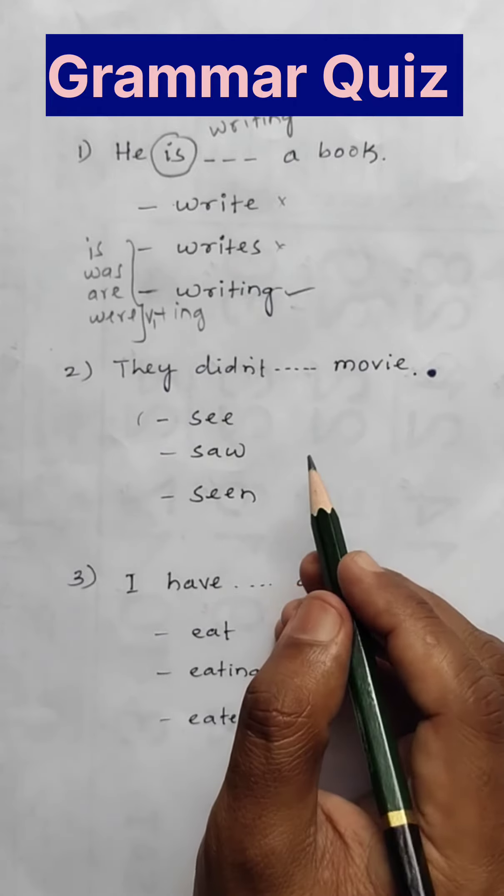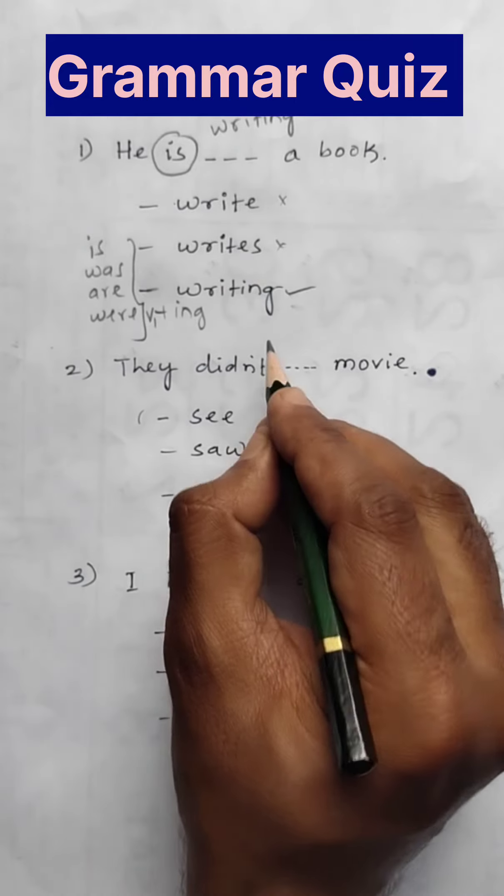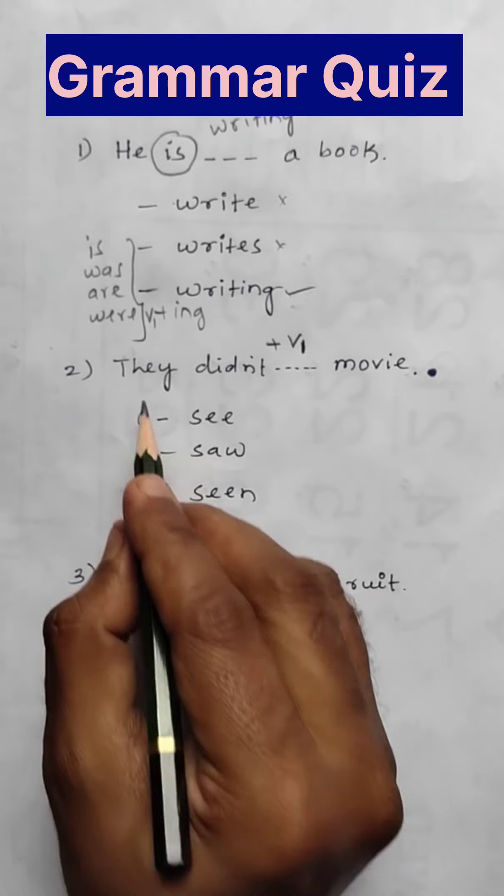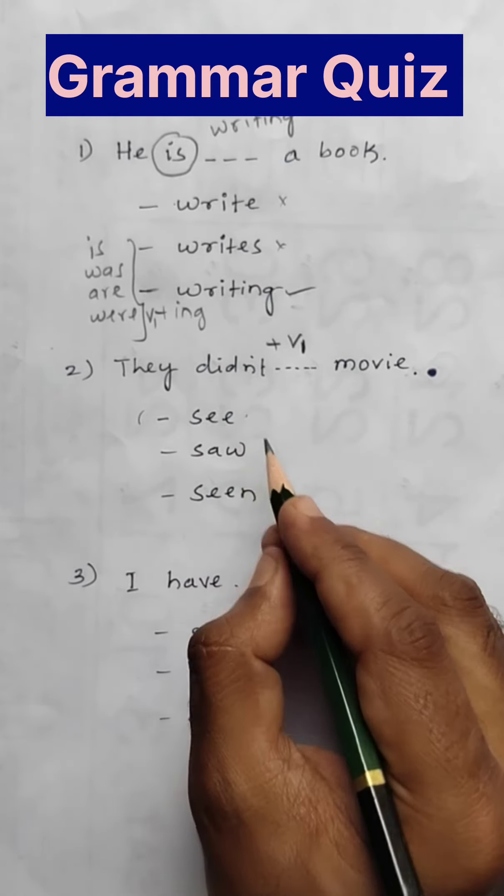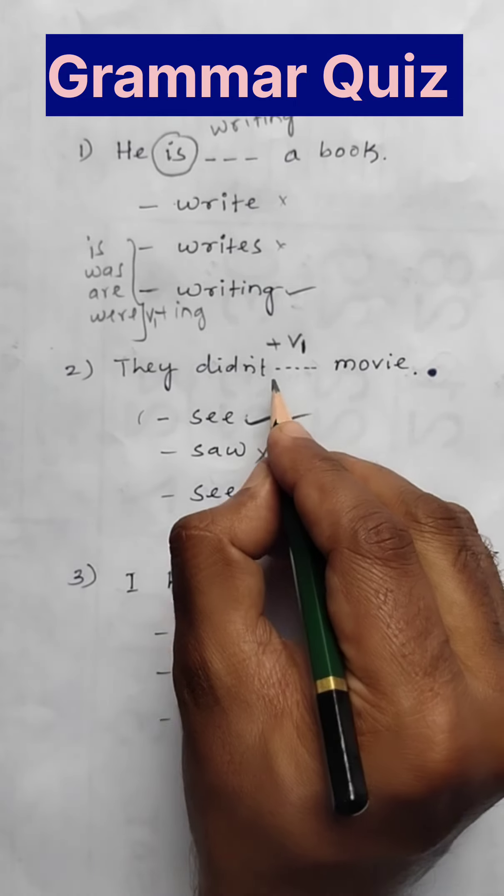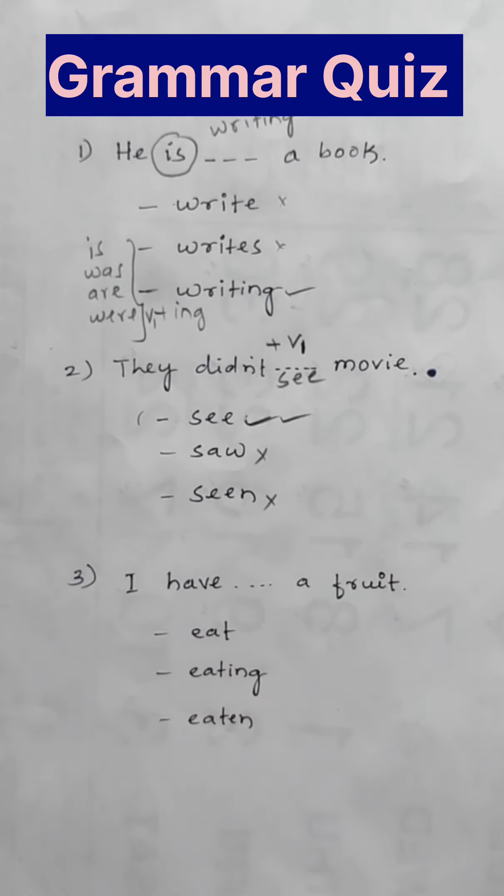Second one. They didn't blank movie. After 'did not,' what will come? V1 will come. V1 means: He did not see a movie. This is wrong, this is wrong. See is the answer. So here, answer: see.